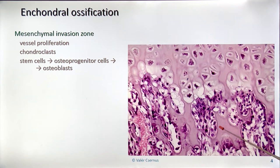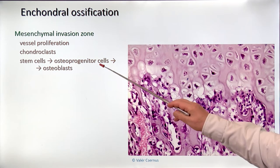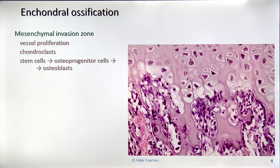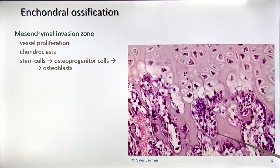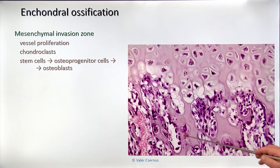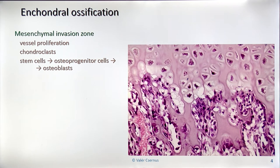What happens later? The stem cells coming behind the chondroclasts will differentiate into osteoprogenitor cells — those are the cells genetically directed toward a certain direction — and then they become osteoblasts. As I mentioned, all blasts have a lot of ribosomes in the cytoplasm which make the cytoplasm blue. These cells sit on the inner wall of the cylinders and start producing the first osteoid material — the organic part of the interstitial substance of the bone.